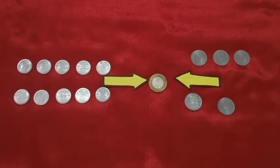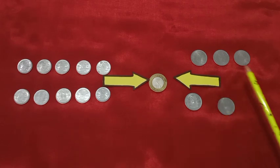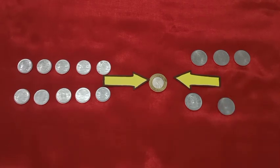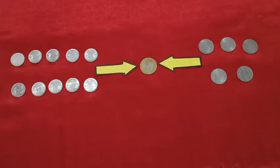So the value of 5 two-rupee coins is same as 1 ten-rupee coin.